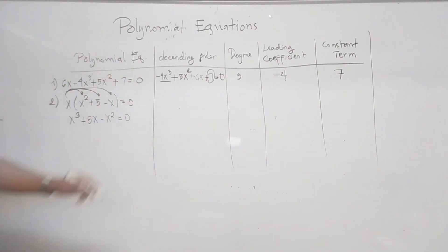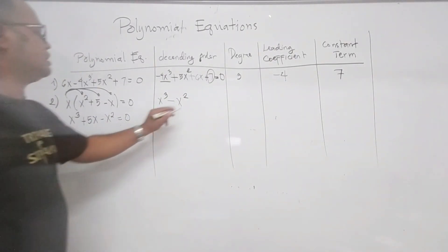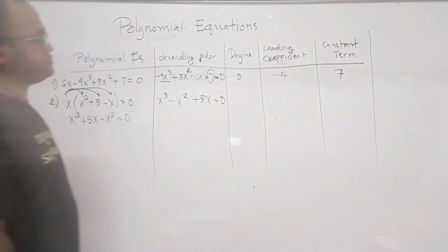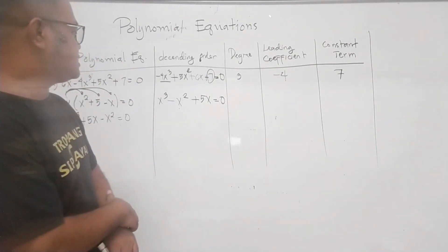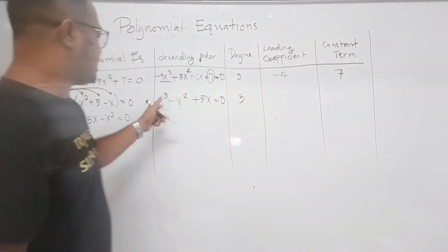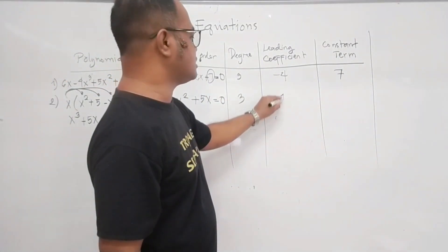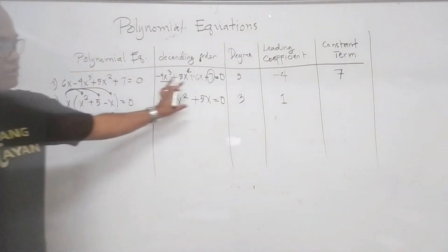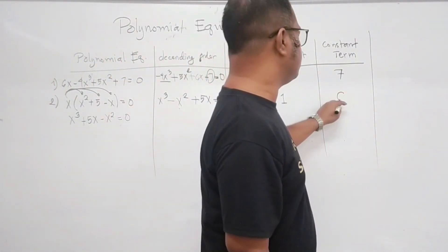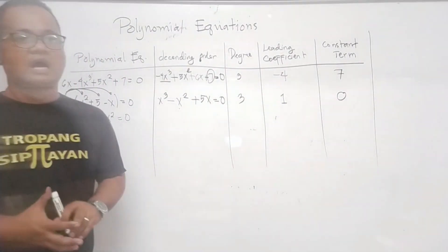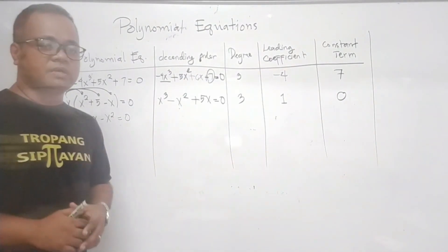After arranging in descending order, the highest exponent is x cubed, followed by negative x squared, then 5x equals 0. The degree is 3. There is no number written in front of x cubed, meaning the leading coefficient is 1. As for the constant term, there is no term without a variable, so the constant term is 0. This is how to determine the degree, the leading coefficient, and the constant term of a given polynomial equation.